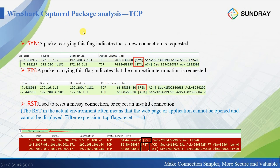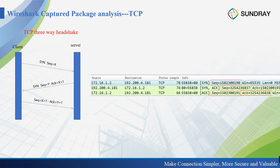TCP connections also have flags such as SYN for setting up a new connection, FIN for terminating a connection, and RST. If you capture many RST packets, this indicates potential network problems due to many messy connections. The TCP three-way handshake works like this: the client initiates with a SYN (sequence number X), the server responds with a SYN-ACK, and then the client sends an ACK to complete the connection.